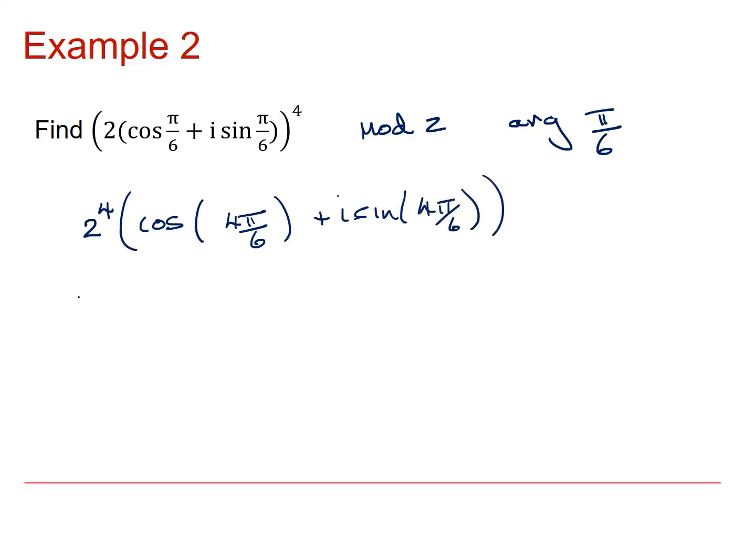Cos of 4 pi by 6, well, I can rewrite that as 2 pi by 3, so this thing will become 2 to the 4 is 16 times cos of 2 pi by 3 plus i sine 2 pi by 3.